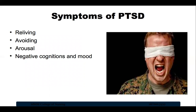In some cases, symptoms don't begin until years after the traumatic event. The severity and duration of the illness can vary from person to person — some people recover within six months while others may take much longer. The symptoms of PTSD are often grouped into four main categories: re-experiencing symptoms, avoidance symptoms, arousal, and negative cognitions and mood.